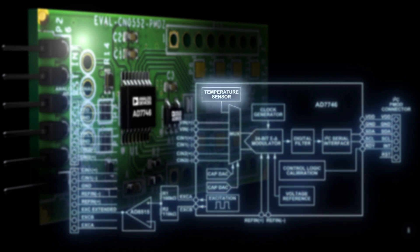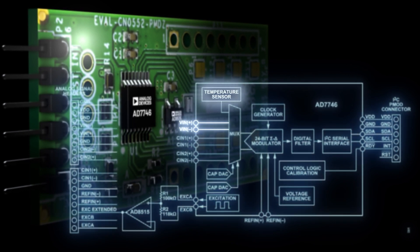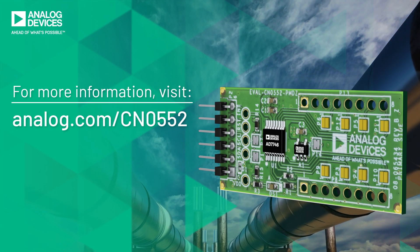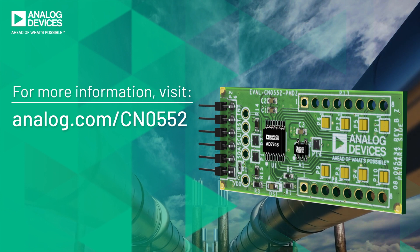An on-chip auxiliary temperature sensor and voltage input simplify system-level calibration. Get the most from capacitive industrial sensors with the CN0552.